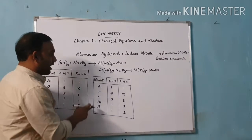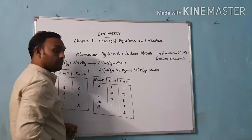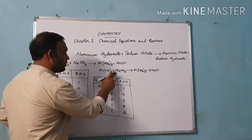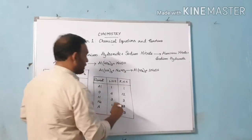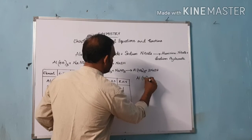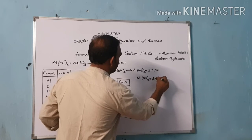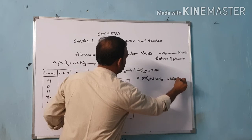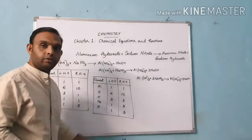To balance sodium, we multiply 3 on the LHS side before NaNO₃. Along with that, one more benefit: if we multiply 3 before NaNO₃, nitrogen will also get balanced. So the equation becomes: Al(OH)₃ + 3NaNO₃ → Al(NO₃)₃ + 3NaOH. This is our new equation.